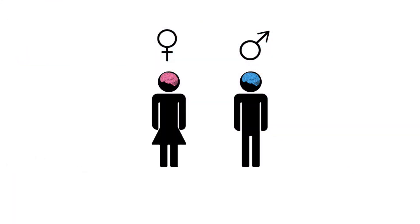Sexual differentiation is the process by which a person develops into either a male or a female. For the purpose of this chapter, the content will be based on a male-female binary to introduce the basic concepts of reproductive development. However, it is important to recognize that in real life, chromosomal sex, physical sex, and gender exist on a continuum and cannot always be simplified into a two-structure system.